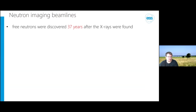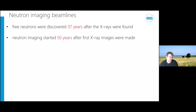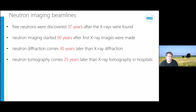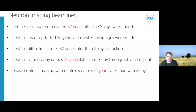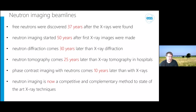Neutrons were discovered 37 years after X-rays and neutron imaging started 50 years after X-ray imaging. Neutron tomography came 25 years after X-ray tomography, though phase contrast imaging has a smaller gap. Nowadays neutrons can be perceived as a competitive and complementary method to state-of-the-art X-ray techniques. It's not belittled as it was maybe 15 years ago when neutron imaging could only achieve spatial resolutions of around 200 micrometers and was very slow. A lot has happened in the recent past.